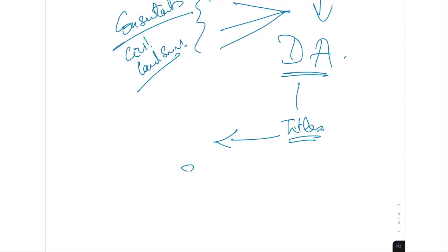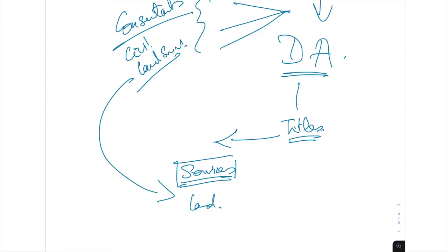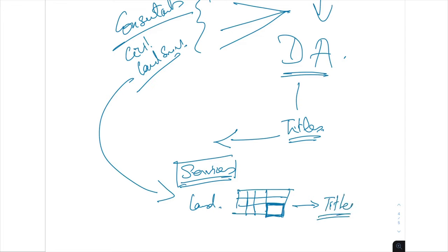Once you've got your services connected, you can get the land surveyor back so they can seal the plan — confirming that what's been done on site matches exactly what was approved on the plans. Someone will do a final check to confirm all services are connected and everything is in order. Then the title department will issue titles for each lot.